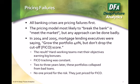All banking crises are pricing failures, because if you price correctly, you can avoid any crisis. Crises come from when pricing is mismatched to the environment — the economic environment, the credit cycle you're living through. The pricing model is the thing most likely to break the bank, especially if that's a meet-the-market price. Any approach can be done badly — a model can also be bad — but pricing is critically important.